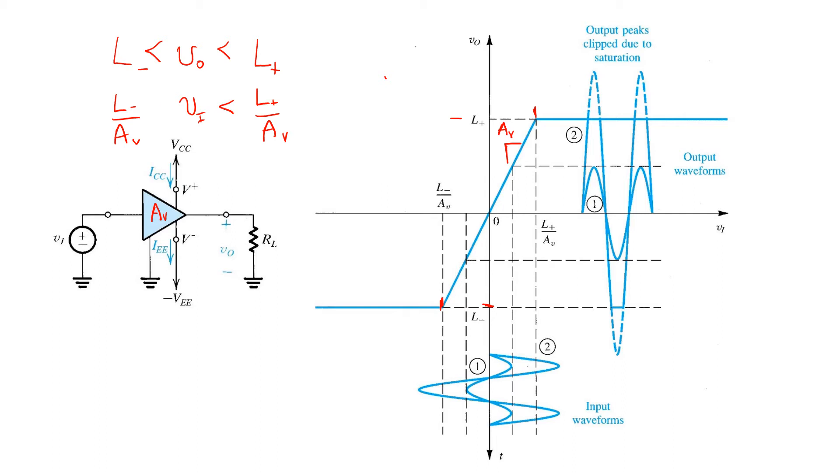So the input voltage must also respect these limits if the linear relationship is to be maintained.